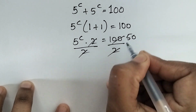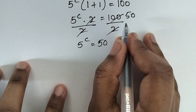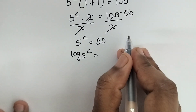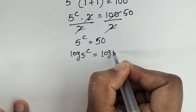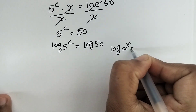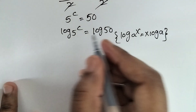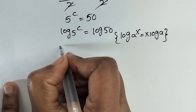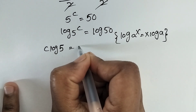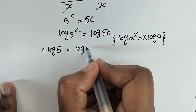Now divide both sides by 2. 2 and 2 cancel, giving 5 power c is equal to 50. Now apply log on both sides: log of 5 power c is equal to log of 50. This is in the form log(a^x) = x·log(a), so we can write c·log 5 is equal to log 50.